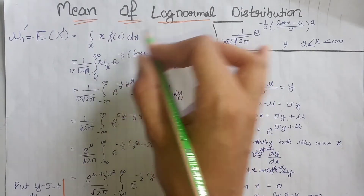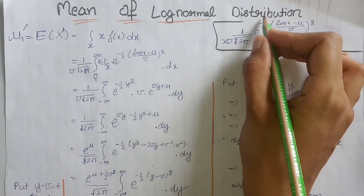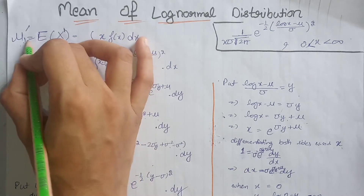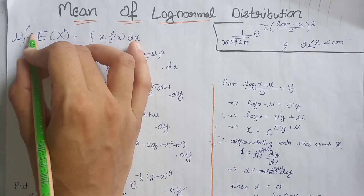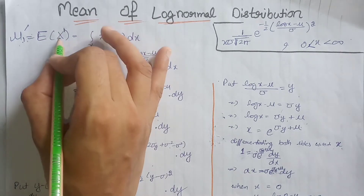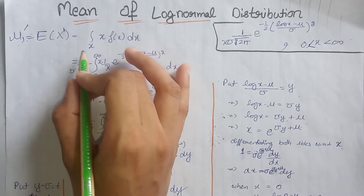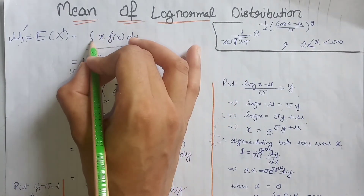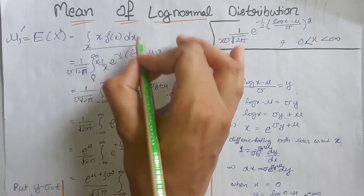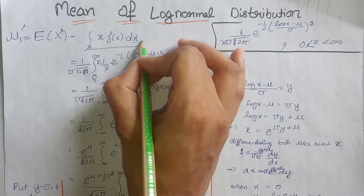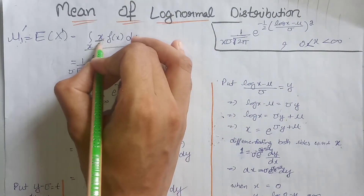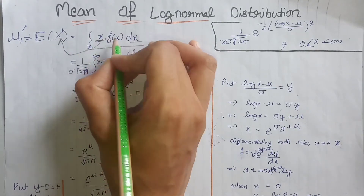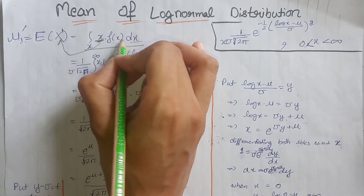We will calculate the mean of the log-normal distribution, which equals the first moment about the origin, denoted μ₁'. We know that μ₁' equals the expectation of X raised to power 1. According to the definition of expectation, we write the integration over all values of x with respect to dx, multiplied by the PDF of the log-normal distribution.